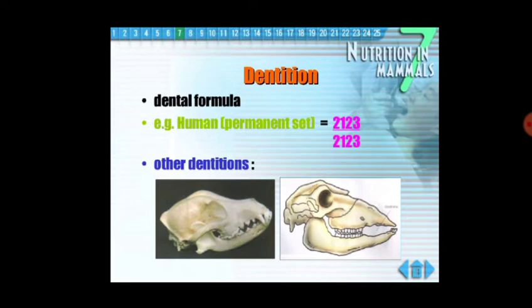Starting from the center, we are having 2 incisors. Then behind the incisors, we are having 1 canine. Then behind the canines, we are having 2 premolars. And behind the premolars, we are having 3 molars in both directions. This 2-1-2-3 dental formula is followed in the upper as well as the lower jaw.